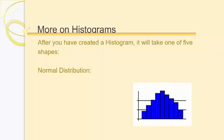The first one is called a normal distribution and it looks like this. It starts low, gets high, reaches an apex, then goes back low. It looks like a bell — like if you superimpose a bell curve on it. This is a normal distribution.